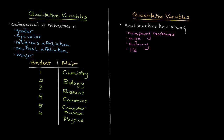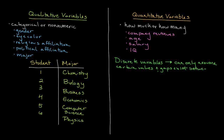A discrete variable is one that can only assume certain values, and there are gaps that exist between these values. A common example would be the number of rooms in a house. If I asked you how many rooms are in your home, you would give me a discrete answer — maybe two, three, four, or five rooms. It's discrete because you can't say 1.25 or 1.75; there are gaps between those values, and you can only select whole figures like ones, twos, threes, fours, and fives.